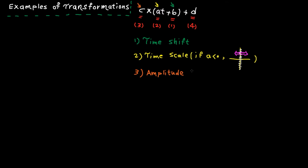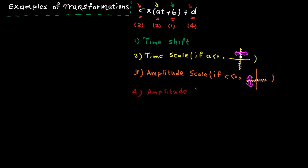Then do amplitude scaling — and if the amplitude coefficient is negative, reflect the signal with respect to the x-axis. Finally, do the amplitude shifting. If you follow these simple steps, you can solve every single example super easily.